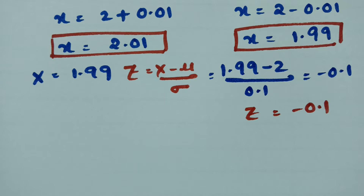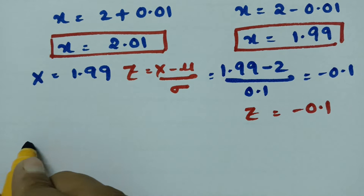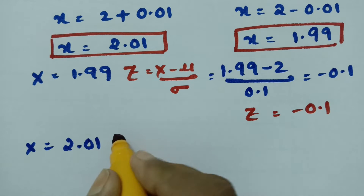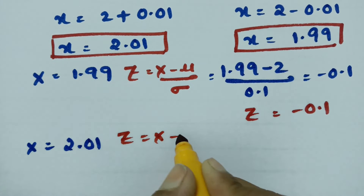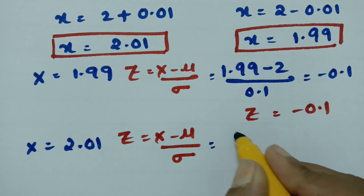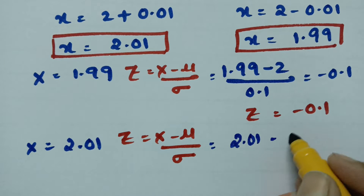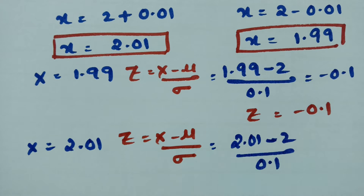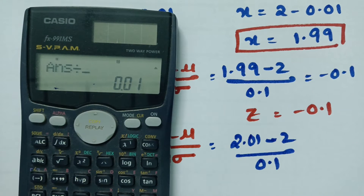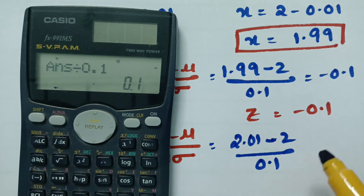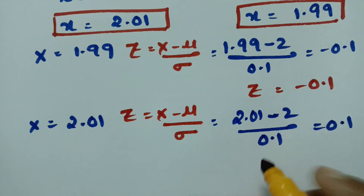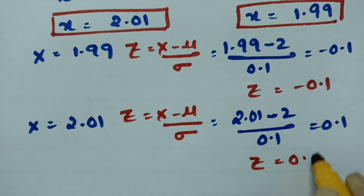Next, if we keep x equal to 2.01, what will be the z value? Again, z equals x minus mu divided by sigma. So z equals 2.01 minus 2 divided by 0.1, which is nothing but plus 0.1. We get the value of z as 0.1.